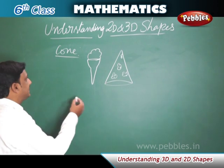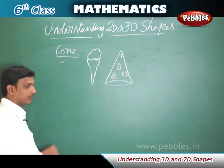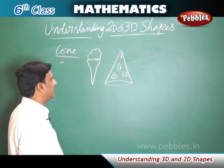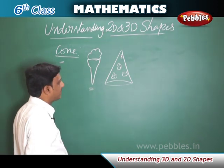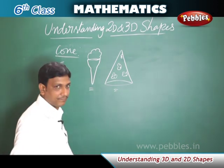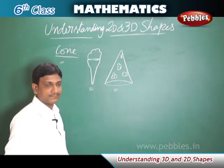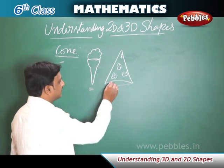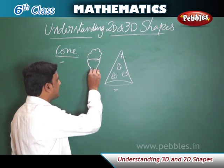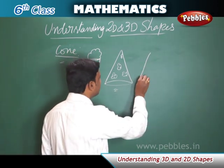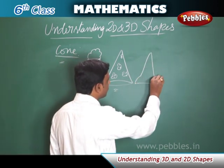Now let us learn about another 3D shape: the cone. In daily life we see objects like an ice cream cone and a birthday cap in cone shape. A birthday cap is directly in cone shape, and if you invert an ice cream cone it also takes the form of a cone.